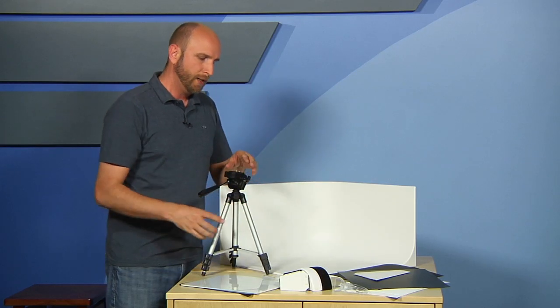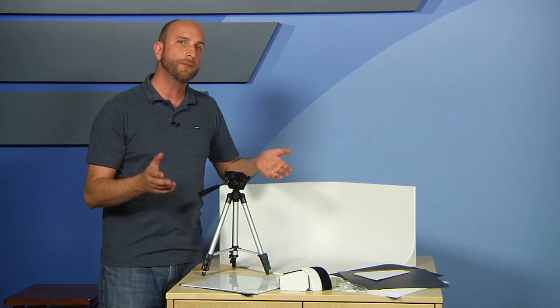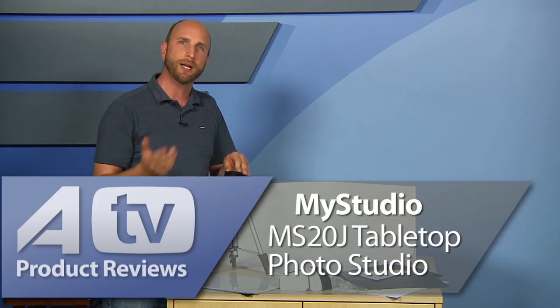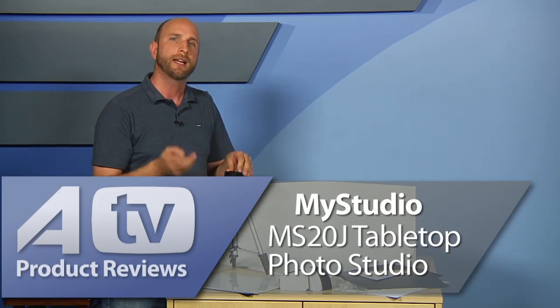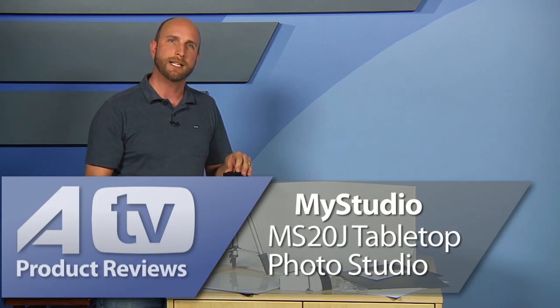If you have a larger camera, you want to use a little bit beefier tripod than this one. But this is just going to work great if you have a point and shoot camera. With this entire system, you'll get terrific results for any small product that you want to put out there. It's the MyStudio MS20J Tabletop Photo Studio by ProPsych with the jewelry kit and bonus tripod for $259.